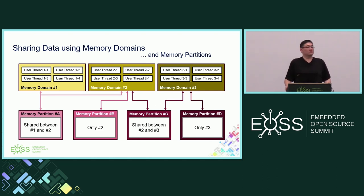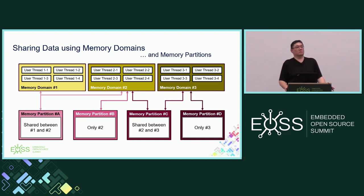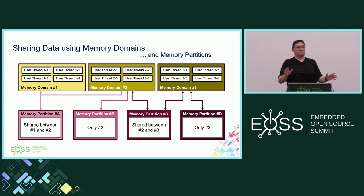Q: Do we have any tooling to help visualize the memory partitioning layout — for example, showing alignment restrictions and suggesting how to order partitions to save space? A: No, we don't currently have that. We do have something to show placement in the linker, but that part doesn't depend on user space.